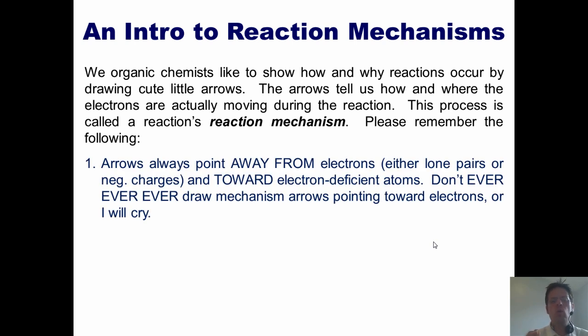One, arrows always point away from electrons, which represent either lone pairs or negative charges, and toward electron-deficient atoms. Don't ever, ever, ever draw mechanism arrows pointing toward electrons, or I will cry.